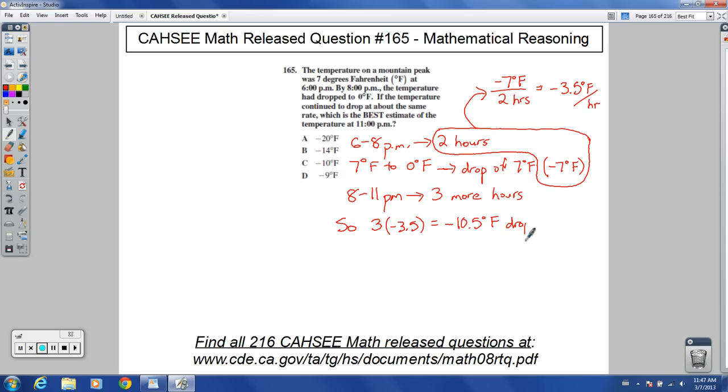that much of a drop from 8 o'clock, from 8 p.m. to 11 p.m. That means since you started at 0 degrees, we're taking 0, we're subtracting 10.5 from that, and we get negative 10.5.